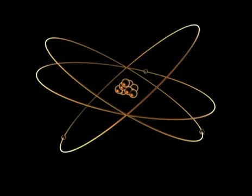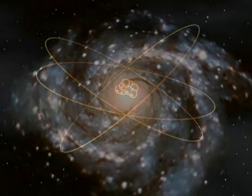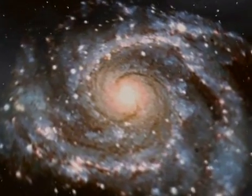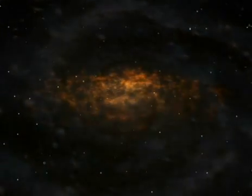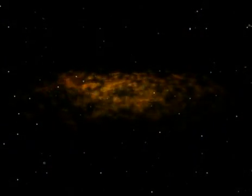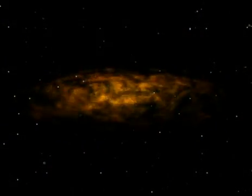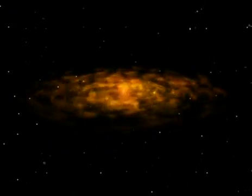In the infinitely small, electrons spin around the atomic nucleus. In the infinitely large, galaxies turn. Nebulae made up of gas and dust rotate and contract with a great mass in the center, the Sun.